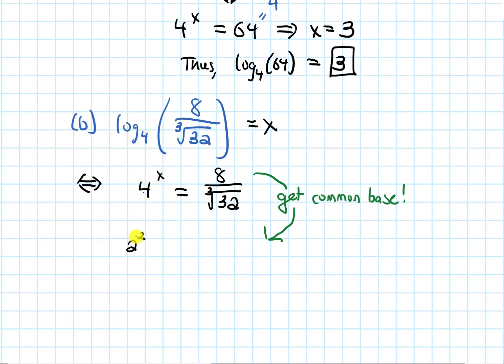So the left-hand side is 2 squared, that whole thing to the x power. 8 is 2 cubed. And then 32 is 2 to the 5. But that's inside of a cube root, and the cube root I can rewrite as a 1 third power.